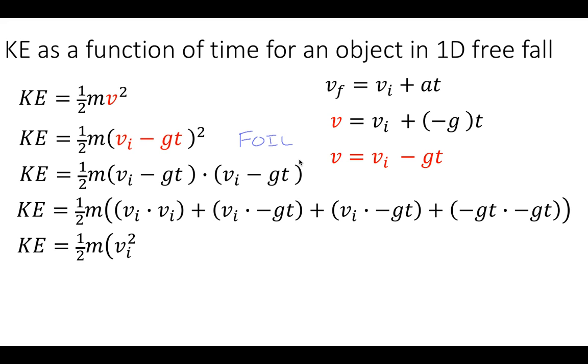You'll notice we have vi times negative gt. We have that twice, so that'll be 2 times vi gt with a negative sign. And then last, we have negative gt times negative gt. The negatives cancel, and we're left with g squared times t squared.